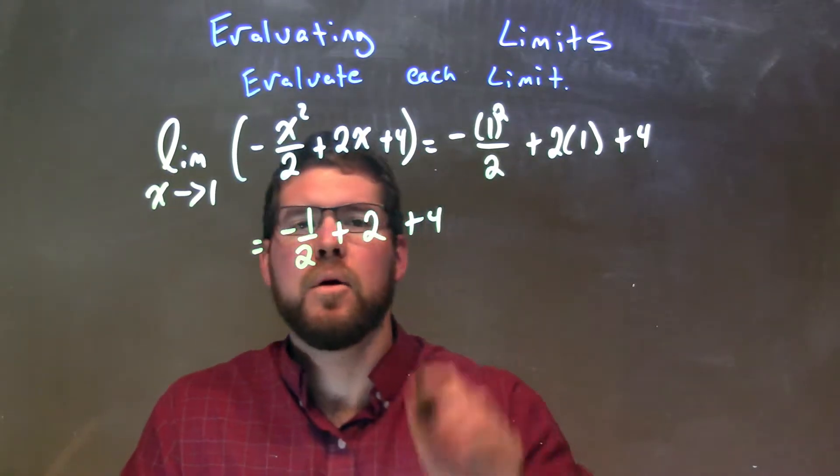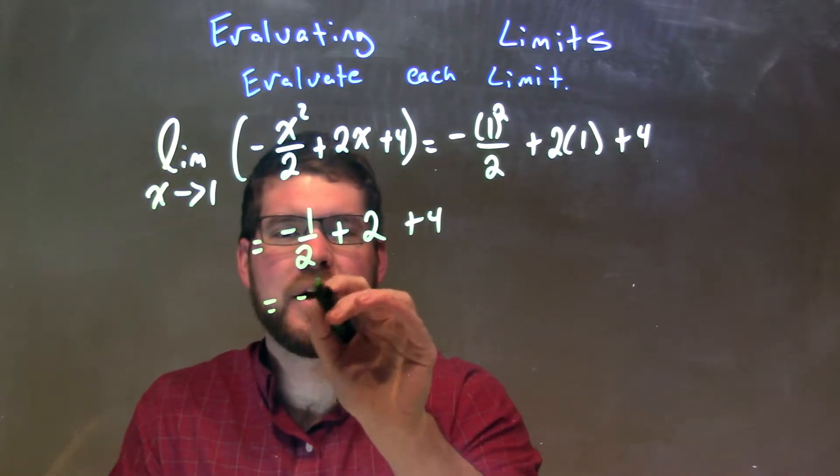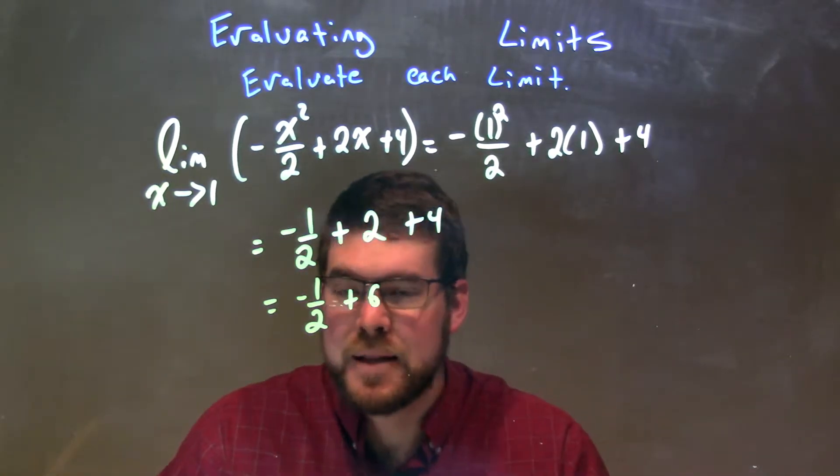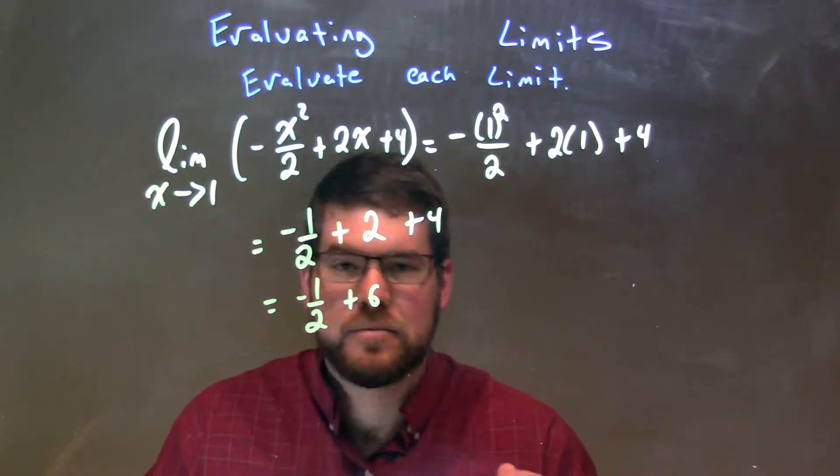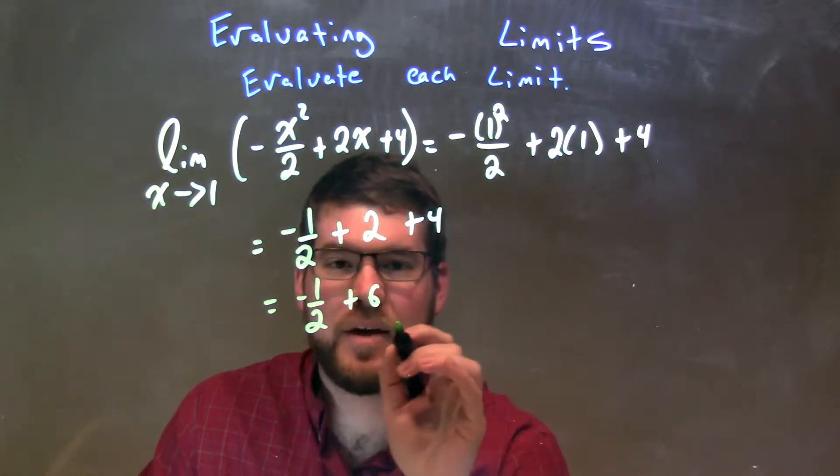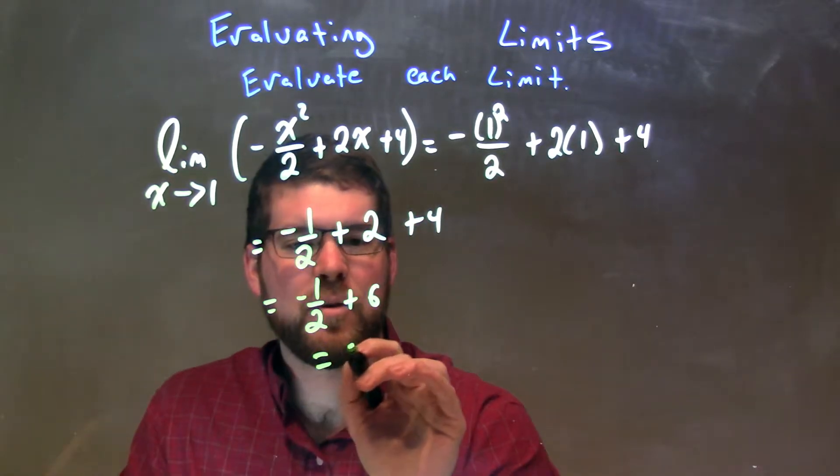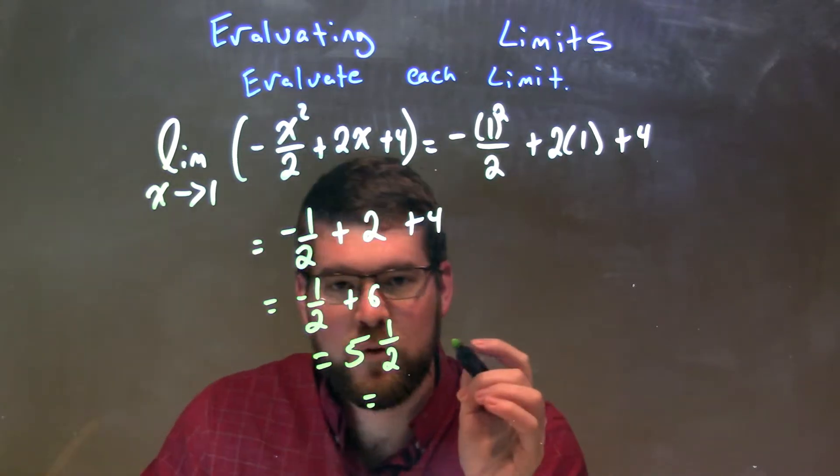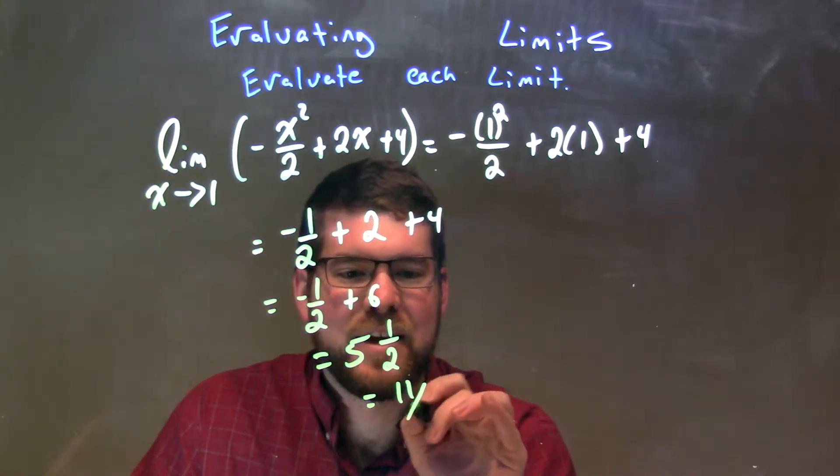Well, 2 and 4 is 6. We have negative 1 half plus 6 here, and now we need to combine this to get a final answer. 6 minus 1 half is 5 and 1 half. And if you want to write that as an improper fraction, that's 11 halves.